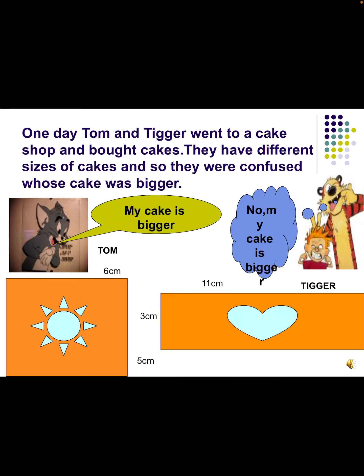Let me begin this chapter with a story. One day Tom and Tigger went to a cake shop and bought cakes of different sizes, and they were confused about whose cake was bigger, so they started quarrelling. One cake has a length of 6 cm and breadth of 5 cm; another cake has a length of 11 cm and breadth of 3 cm. Now let's find out whose cake is bigger.